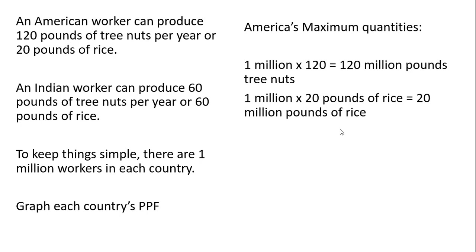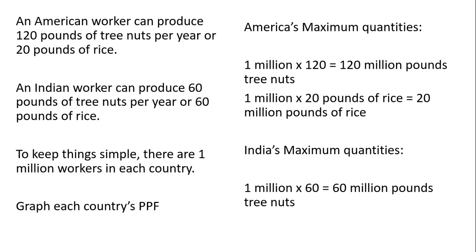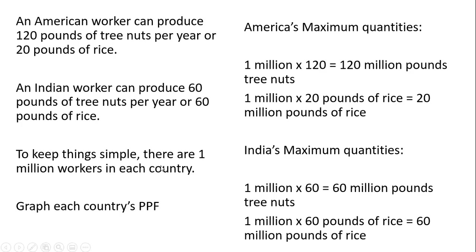In India, same idea. If a given worker spent their entire year trying to produce tree nuts, that worker could produce 60 pounds. Given there are a million workers, we get 60 million pounds of tree nuts in total. On the other hand, if an Indian worker spent the entire year trying to produce rice, one million workers times 60 pounds of rice each gives us 60 million pounds of rice.